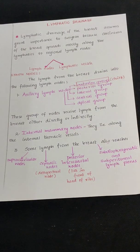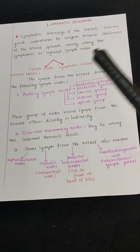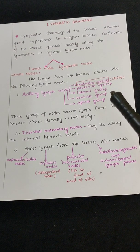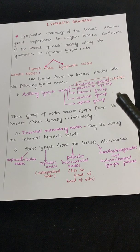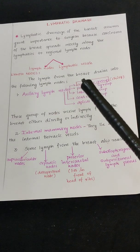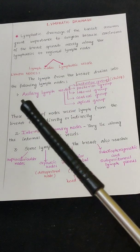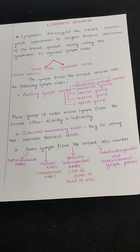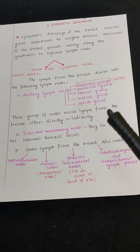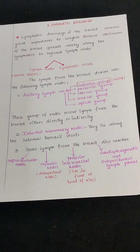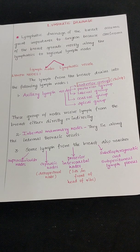The first group is the axillary lymph nodes, which has five subgroups: anterior group, posterior group, lateral group, central group, and apical group. The anterior group is the chief one, as most of the lymph from the breast drains into it. These groups of nodes receive lymph from the breast either directly or indirectly.